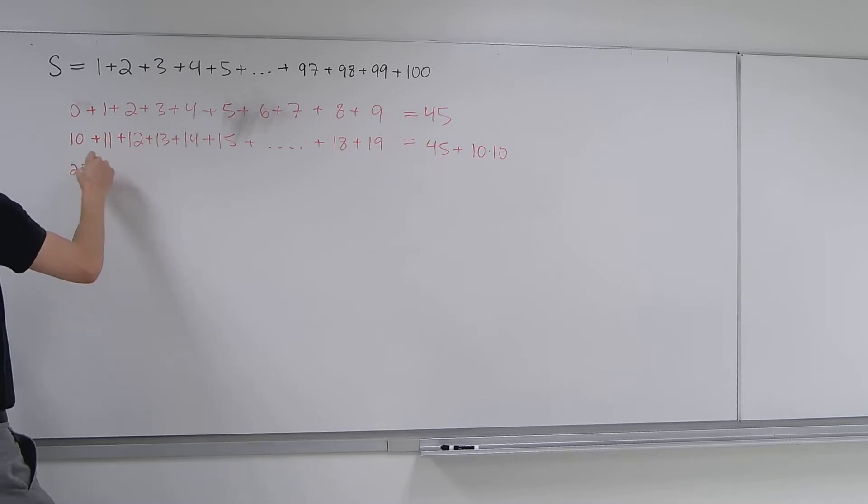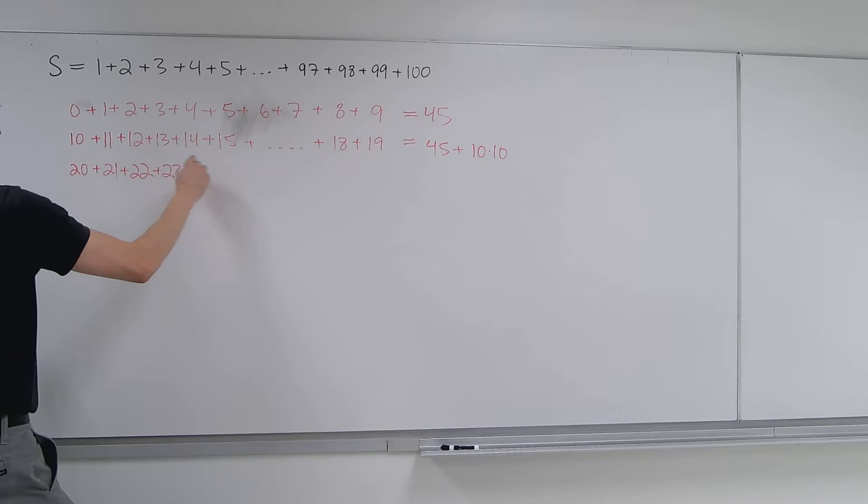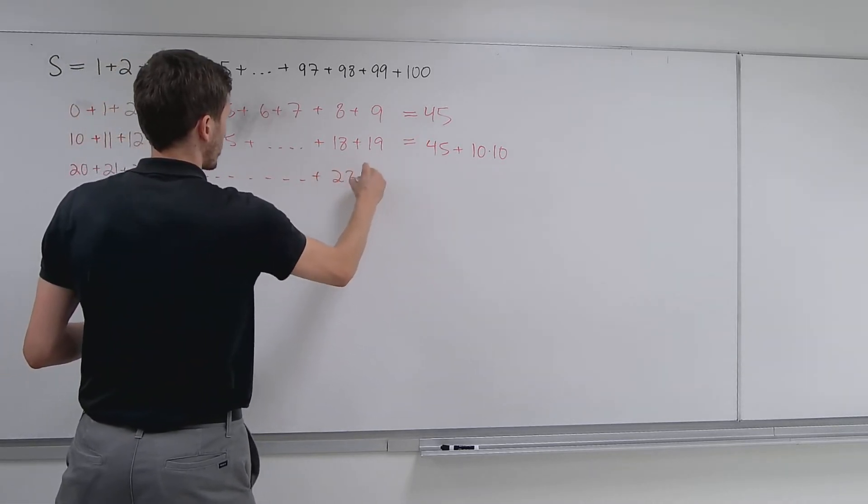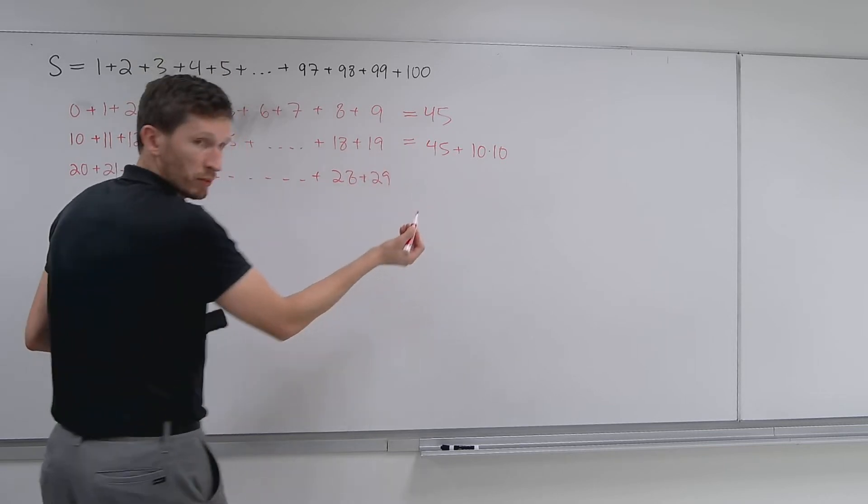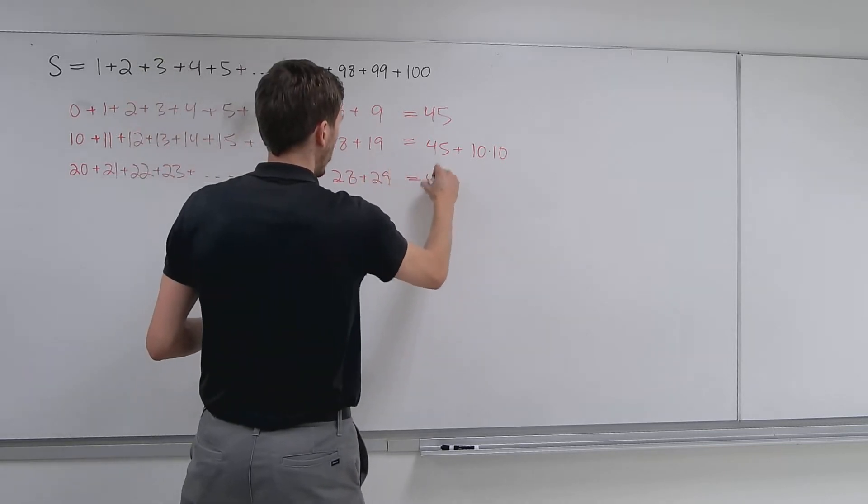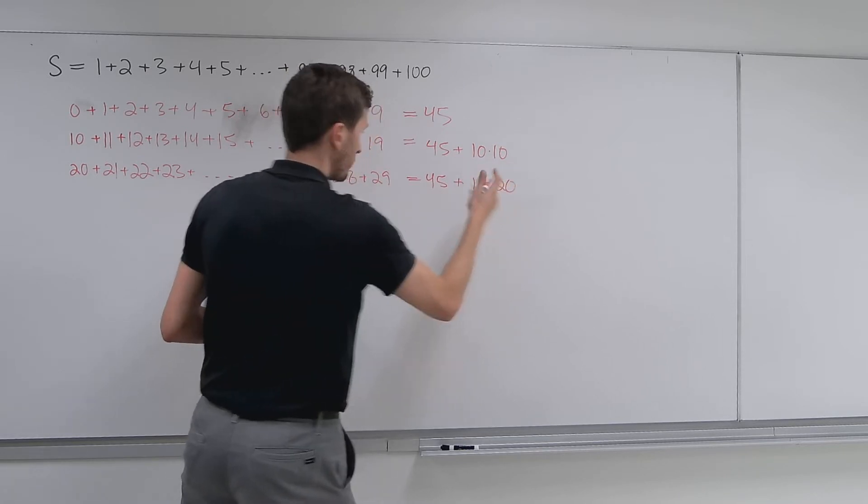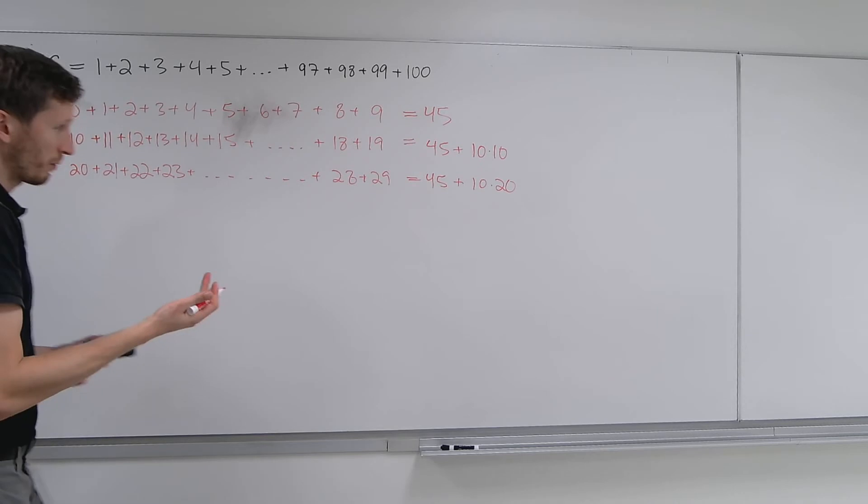The next I can do is, well, let me try 20 the same way. And so, 21 plus 22 plus 23, so on and so forth, to plus 28 plus 29. And this is going to be very similarly. Again, the 45 and then plus 20, you're adding 10 twenties, so 10 times 20 now. Alright, interesting, right?